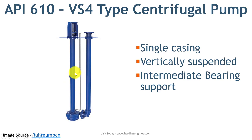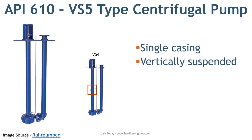The next is VS5 type pump. VS5 also has a separate discharge column. The difference is in the vertically suspended shaft — in VS5 there are no intermediate bearings. The pump shaft is cantilevered and supported by the top bearing only, so the shaft runs long from the impeller to the driver end with no intermediate support.